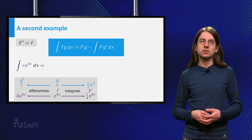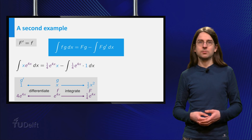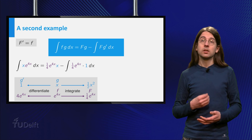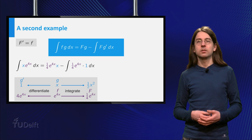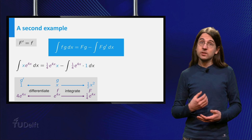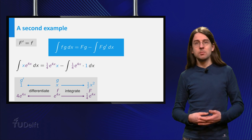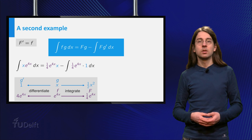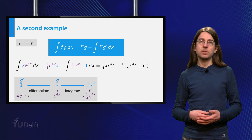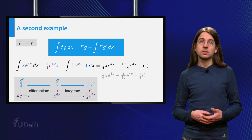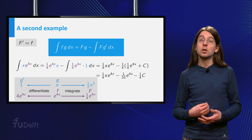Carefully applying the formula for integration by parts, we obtain that the integral of x times e^(4x) equals one-quarter e^(4x) times x minus the integral of one-quarter e^(4x) times 1. We are left with one-quarter times the integral of e^(4x) dx. The new integral we need to calculate is simpler than the one we started with. Indeed, the integral of e^(4x) equals one-quarter e^(4x) plus a constant. So our final result is that the integral of x times e^(4x) equals one-quarter x·e^(4x) minus one-sixteenth e^(4x) minus one-quarter c.